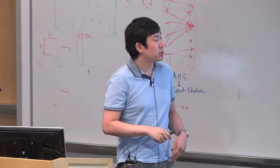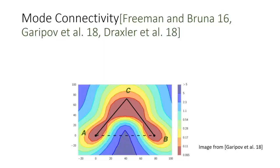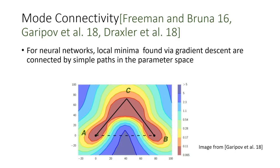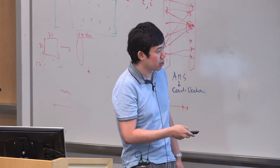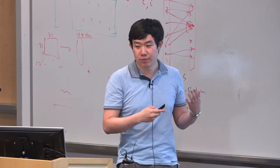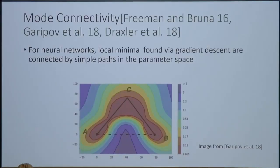Let me explain what landscape connectivity means. This is also known as mode connectivity — a phenomenon recently discovered. For neural networks, local minima found by gradient descent or any other popular optimization algorithm are connected by simple paths in the parameter space. If you look at this picture, A is one local minimum, B is another local minimum found by running gradient descent on a different random initialization.